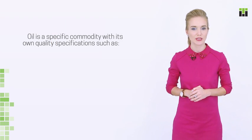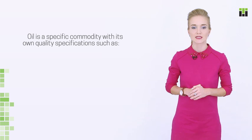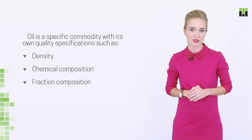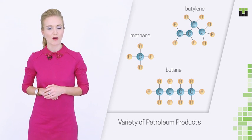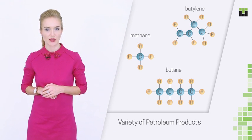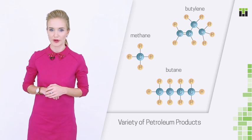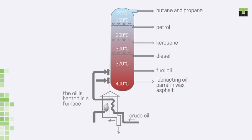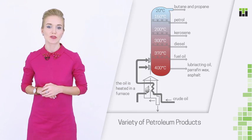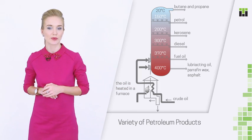Oil is a specific commodity with its own quality specifications such as density, chemical and fraction composition, and purity. Oil is the origin of many products of great practical value. As it is processed, dissolved hydrocarbons — mostly methane — are first separated. Then it gets heated; compounds with the least hydrogen content that have the lowest boiling temperature turn to gas first. As the temperature rises, they are followed by hydrocarbons with higher boiling temperature. This way, we can separate certain blends or fractions of oil. Typically, we obtain three fractions which are then further separated.